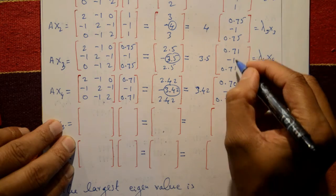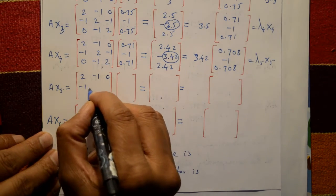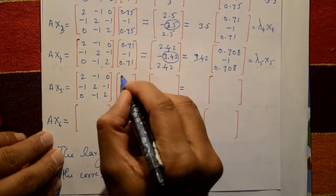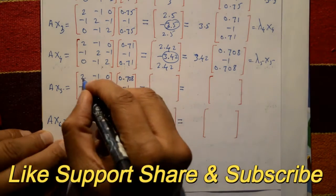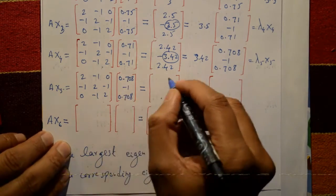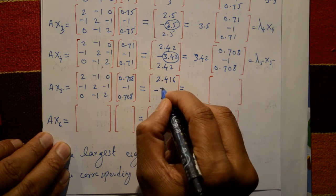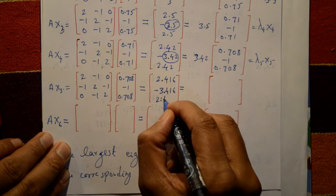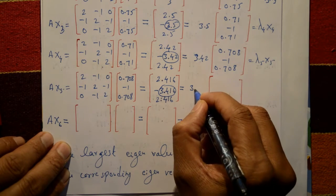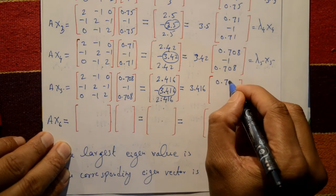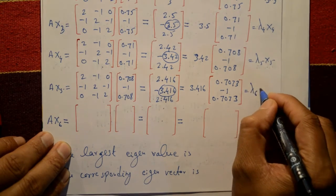Sixth iteration: A × x5 with x5 = [0.708, -1, 0.708]ᵀ. Matrix multiplication gives [2.416, -3.416, 2.416]. The numerically largest element is 3.416; take it outside as common factor, giving λ₆ = 3.416 and x6 = [0.708, -1, 0.708].